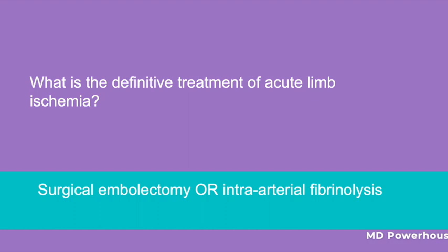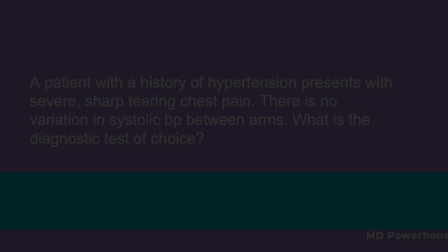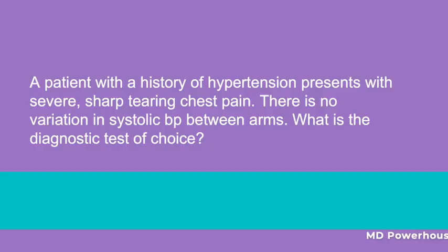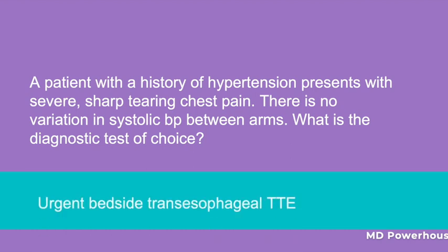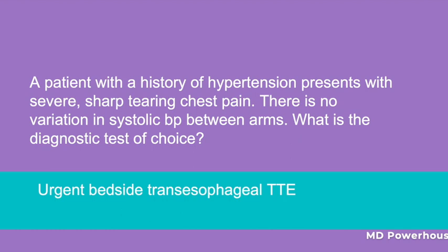A patient with a history of hypertension presents with severe, sharp, tearing chest pain. There is no variation in systolic blood pressure between arms. What is the diagnostic test of choice? Urgent bedside transesophageal echo.